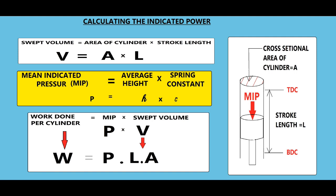The mean height can be converted into pressure by multiplying by the spring constant — this is known as mean indicated pressure, which represents the mean value of pressure during the power stroke. When calculating the indicated power, first we need to calculate the work done. We already found the average pressure value, now we need to find the volume component — that is the swept volume. Once we multiply the mean indicated pressure by the swept volume, we will get the work done in the power stroke.